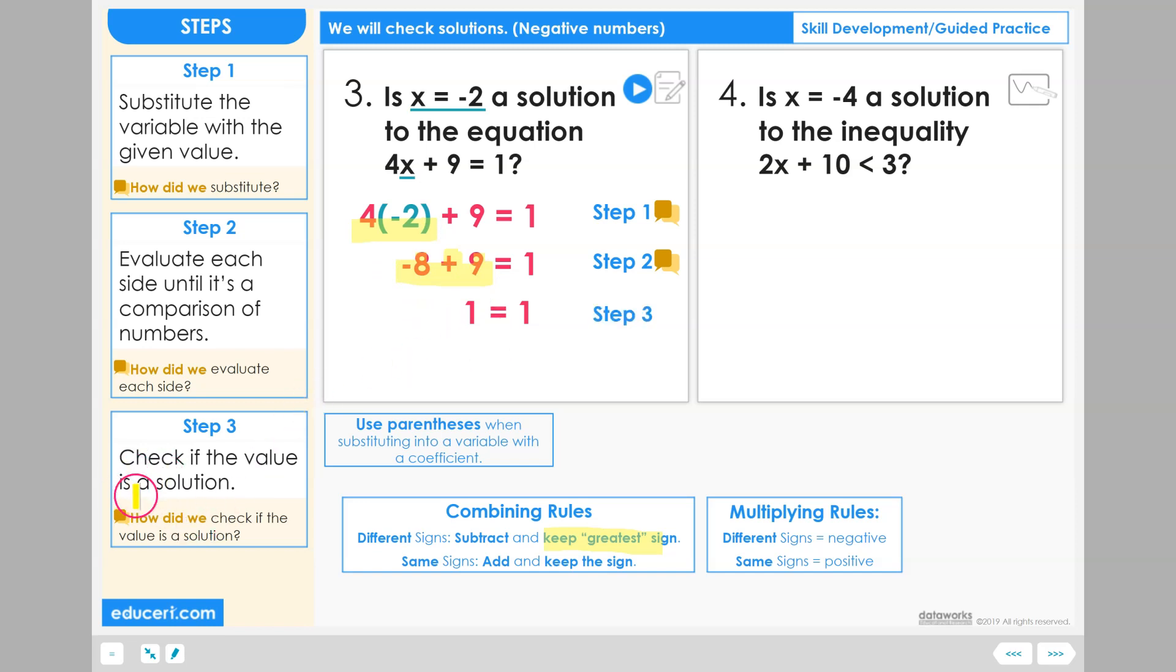Step 3: Check if the value is a solution. Once again, we take a look at this final comparison. If it's true, then it is a solution. If it is not true, it is not a solution. 1 equals 1 is a true comparison. So the answer is yes. X equals negative 2 is a solution.